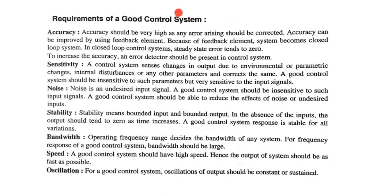That is the basic comparison between open loop control system and closed loop control system. Now we will discuss what is the requirement of a good control system. These are the basic requirements: accuracy, sensitivity, noise, stability, bandwidth, speed, and oscillation.